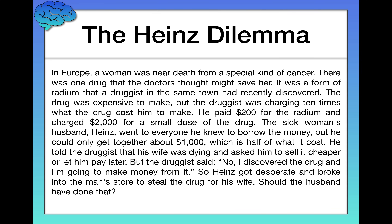In Europe, a woman was near death from a special kind of cancer. There was one drug that the doctors thought might save her — a form of radium that a druggist in the same town had recently discovered. The drug was expensive to make, but the druggist was charging 10 times what it cost him. He paid $200 for the radium and charged $2,000 for a small dose. The sick woman's husband, Heinz, went to everyone he knew to borrow the money, but could only get together about $1,000 — half of what it cost. He told the druggist that his wife was dying and asked him to sell it cheaper or let him pay later. But the druggist said, "No, I discovered the drug and I'm going to make money from it."